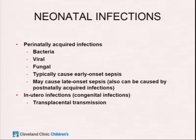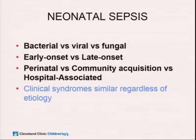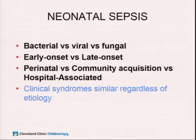We're going to divide this up into perinatally acquired infections and in utero or congenital infections. There are bacterial causes, viral causes, and fungal causes, which typically cause early onset sepsis but may also cause late onset sepsis. In utero or congenital infections are usually from transplacental transmission. It's helpful to think about how the infection was acquired — perinatally versus community acquired versus hospital acquired — though clinical presentations are similar regardless of etiology.